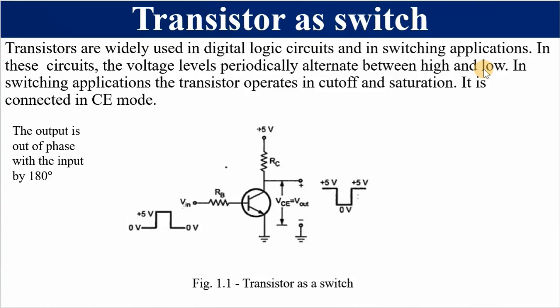The voltage across a switch is zero when it is turned on, and it is equal to the supply voltage when it is turned off — hence high and low. When using a transistor as a switch, when it is on it will be operating in saturation mode, and when it is off it will be operating in cutoff mode. This transistor is a BJT NPN type connected in common emitter configuration mode (CE). Let us look at the relationship between the output and the input.